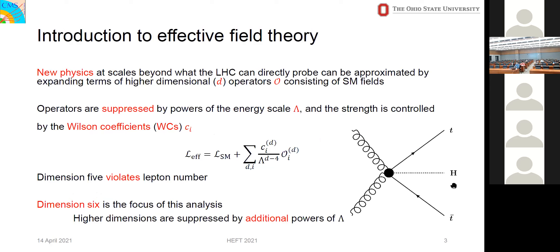After the discovery of the Higgs boson in 2012, the LHC has provided no definitive evidence of anything unexpected. There were some recent results from LHCb which may indicate something new, but we're not sure yet. If we assume the scale of new physics is beyond the scale of LHC, how might new physics appear? That brings us to effective field theory, where new physics beyond what the LHC can directly probe can be approximated by expanding terms of higher dimensional operators, suppressed by powers of the energy scale lambda, with strength controlled by the Wilson coefficient Ci. Dimension six operators are our focus, as dimension five violates lepton number and higher dimensions are suppressed by additional powers of lambda.